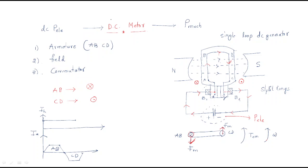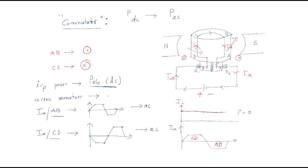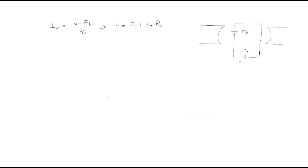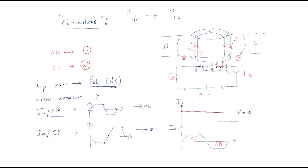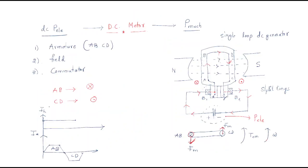In the last session we discussed the single-loop DC motor. A DC motor takes electrical power and gives mechanical power. In the armature conductors AB and CD, the current is AC, but the load current is constant DC. This conversion from AC to DC is done by the commutator.